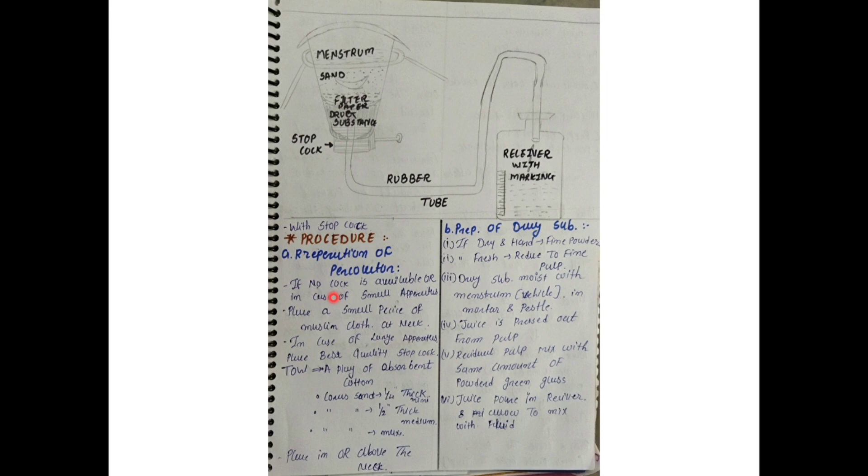First, we will see how we prepare the percolator for this process. There are two conditions. One is that your percolator is small and has no cock. In that case, we will take a small muslin cloth and fit it in the lower area so that nothing passes through unfiltered. So, we will add a muslin cloth because there is no cock.